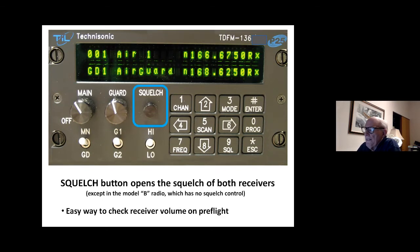The squelch button on the plain and the A models, everything except the B models, opens the squelch of both receivers. So that's a really easy way to number one, set the volume, and number two, check the fact that you've got receiver audio when you go to do a radio check on the pre-taxi radio check. So that's the squelch button on all but the newest model radios.